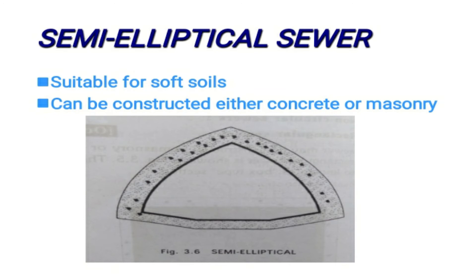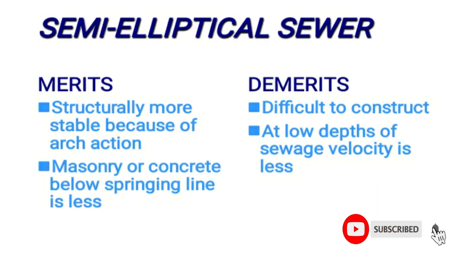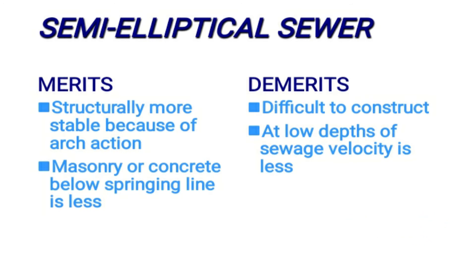The semi-elliptical shape is structurally more stable. Below the springing line, masonry or concrete amount is less, and arc action helps support the structure. The semi-elliptical shape is defined by its springing line, and the shape performs well but has limitations at low depths for maintaining velocity.